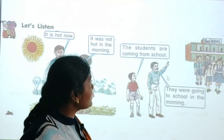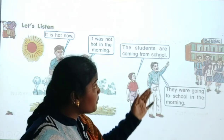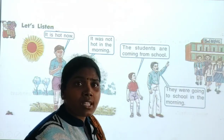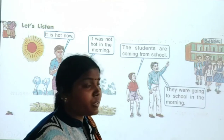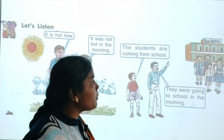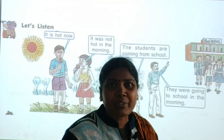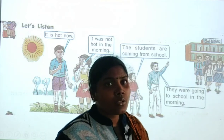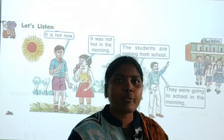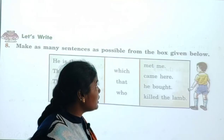The son says to his father: 'The students are coming from school' — they are coming home after school. The father responds: 'They were going to school in the morning' — if they went to school in the morning, then they will come back from school. This shows how we can talk to each other using present and past tense naturally.